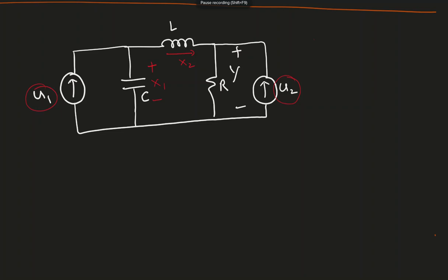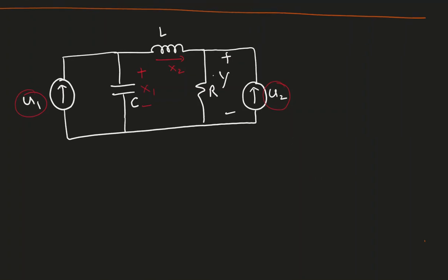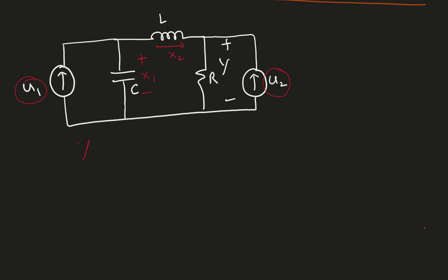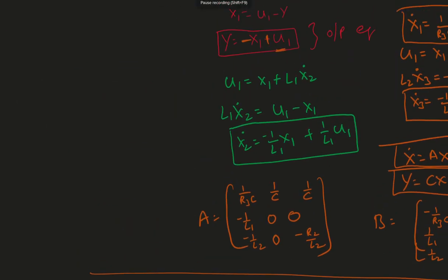I always feel writing the output is a bit easier. My Y here is the output Y equal to R times whatever the current passing through this. If I apply KCL at this point, Kirchhoff's current law, X2 current is coming in and U2 is coming in. So the current passing through this must be X2 plus U2. Y is the voltage according to Ohm's law, I times R. So most of the circuits, it's easy to write the output equation, so go ahead and write down the output equation.